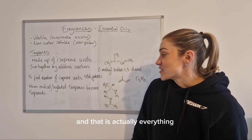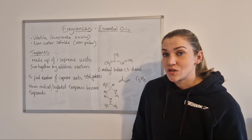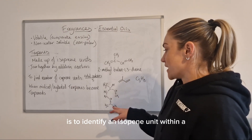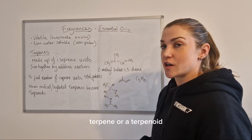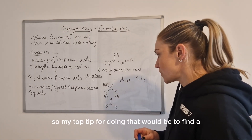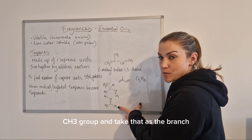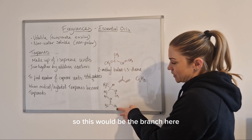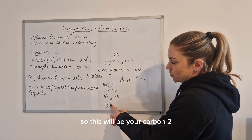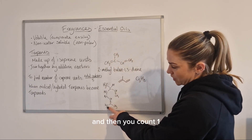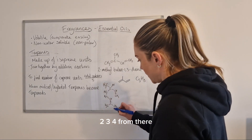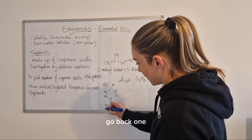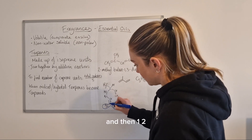That is essentially everything you need to know on terpenes. The other thing you could be asked is to identify an isoprene unit within a terpene or terpenoid. The top tip for doing that is to find a CH₃ group and take that as the branch — that becomes carbon two. Then go back one carbon and count one, two, three, four from there.